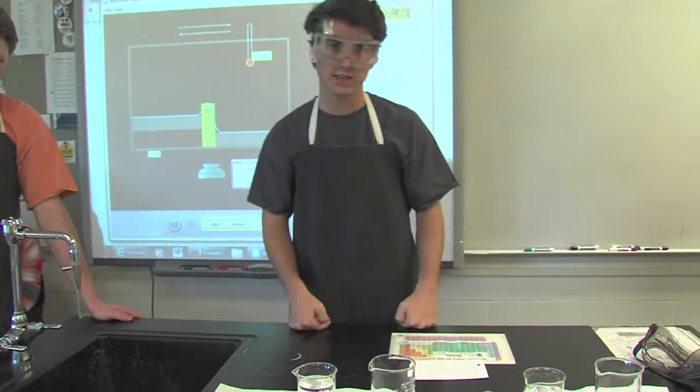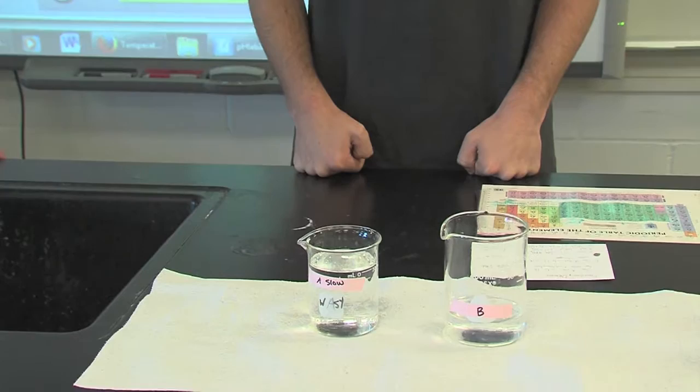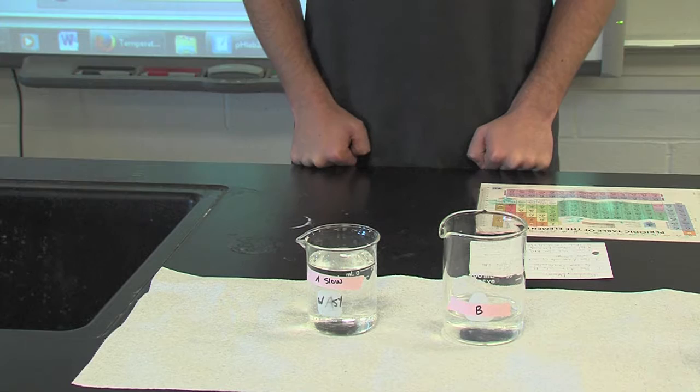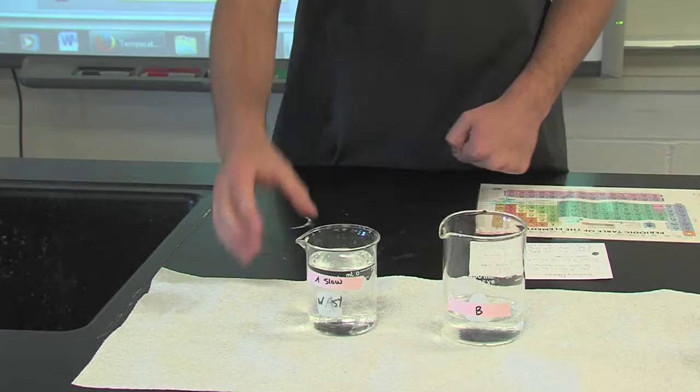This is the iodine clock. In this beaker I have 25 milliliters of 0.2 molar potassium iodate and 175 milliliters of distilled water. In this beaker we have 10 milliliters of 0.2 molar sodium metabisulfate, 30 milliliters of 2% starch, and 40 milliliters of H2O. I'm going to add it.